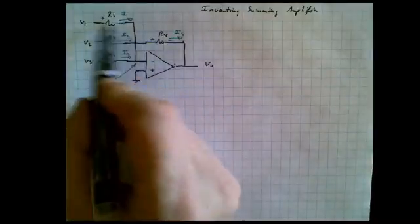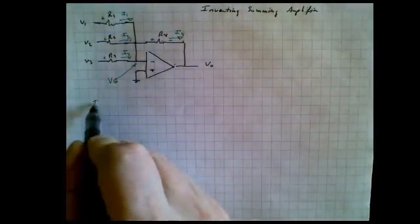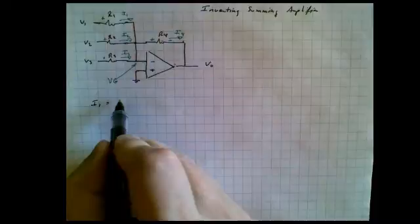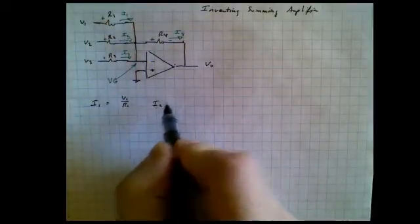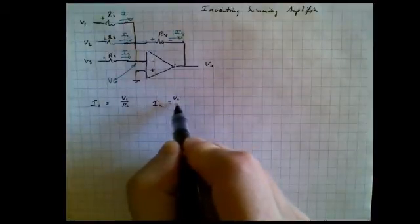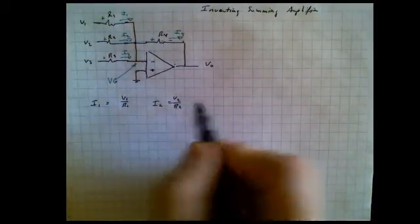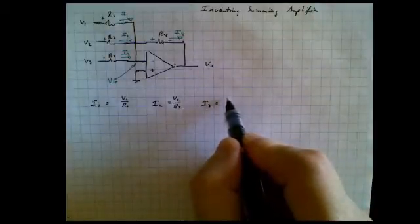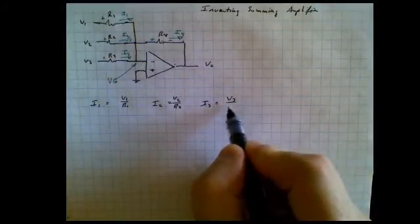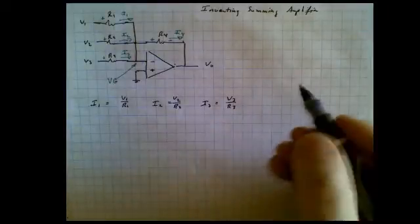So now let's see how we can determine what the relationship is between input and output. The first thing we notice is that I1 is equal to V1 divided by R1. That's Ohm's law. And I2 is equal to V2 divided by R2. And I3 is equal to V3 divided by R3.